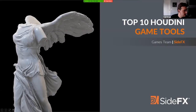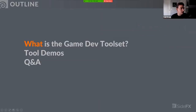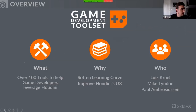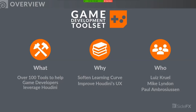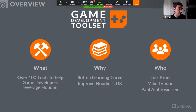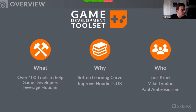Today we'll talk about what the game dev tool set is, go into tool demos, and then we're here for Q&A. The game development tool set is a set of over a hundred tools to basically help game developers leverage Houdini. They range from everything from simple tools all the way to photogrammetry, effects, and vertex animation textures.